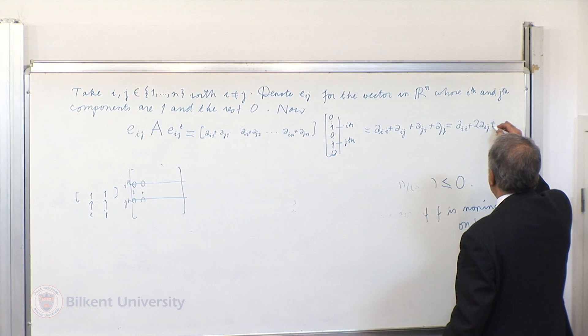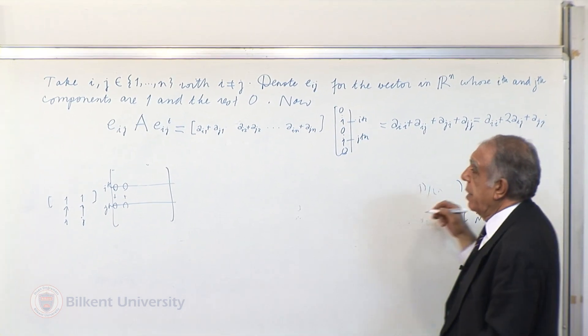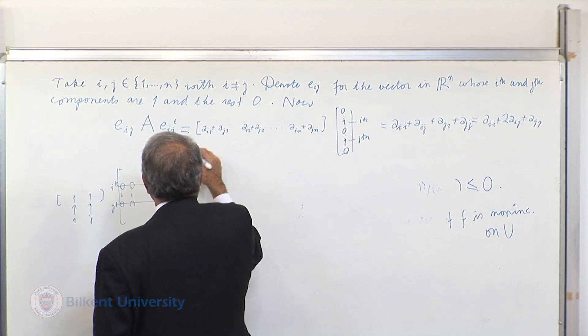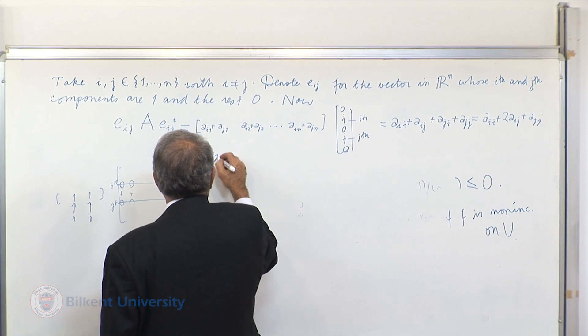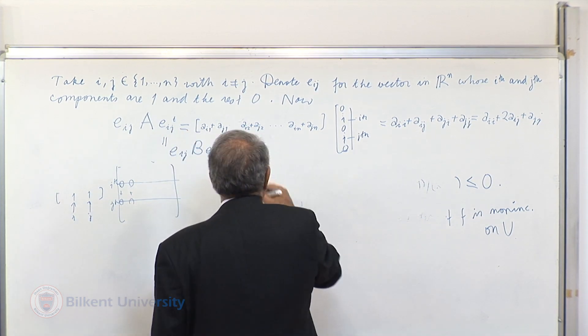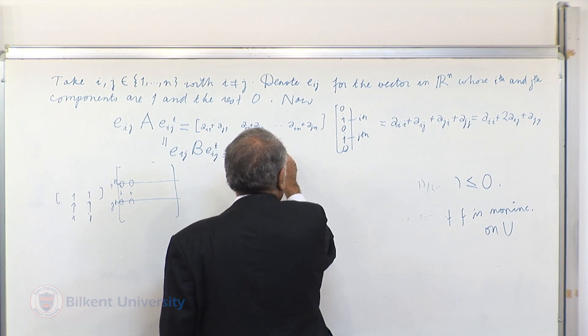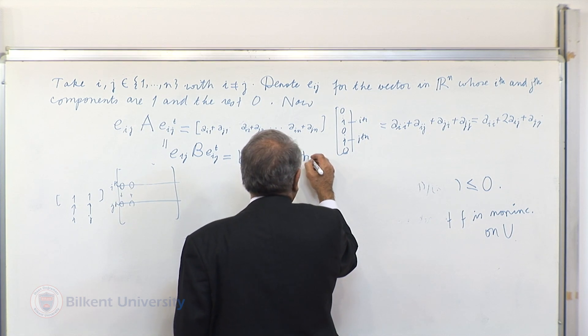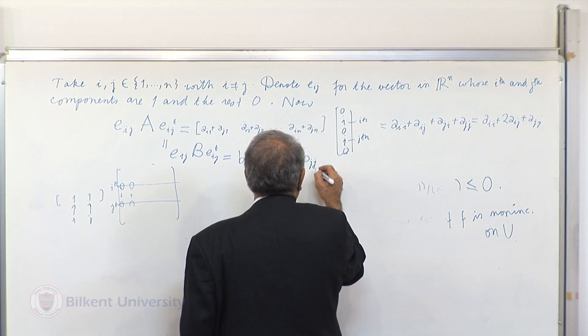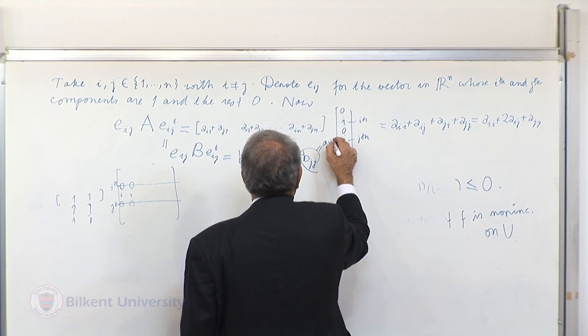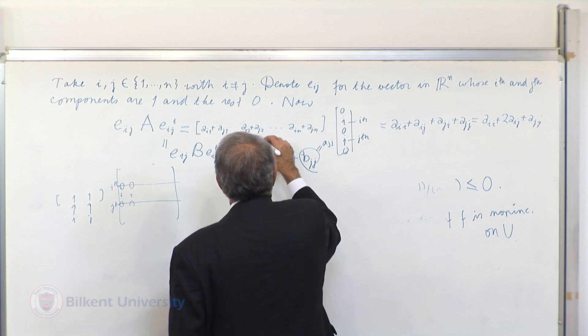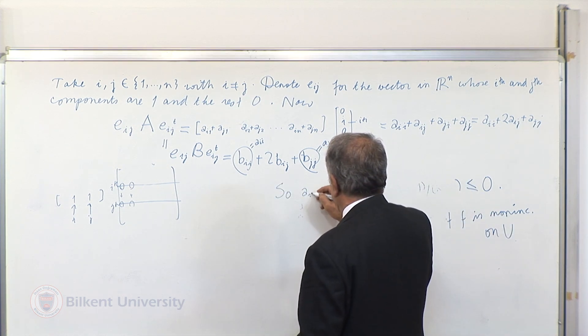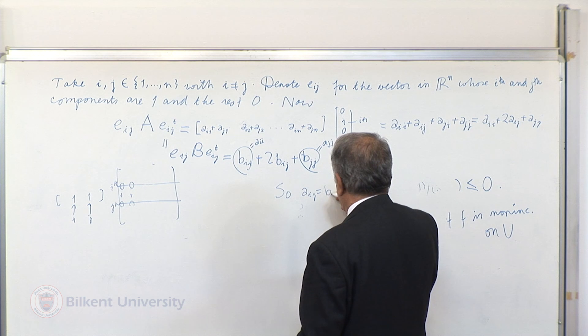But this is equal to E_ij B E_ij transpose. But that will be B_ii plus 2B_ij plus B_jj. But this is equal to A_jj. This is equal to A_ii. So these will cancel, and we'll get A_ij equal to B_ij.